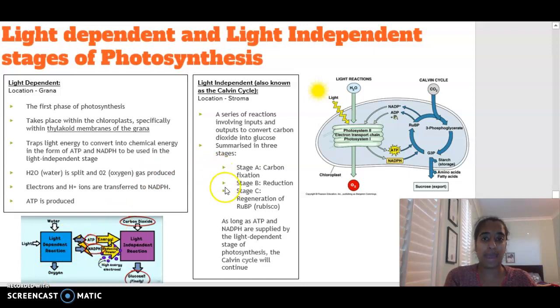Moving on to the second part of photosynthesis, this ATP and NADPH is going to be involved as an input. So the light-independent stage, you may also have heard it as the Calvin cycle, those two names are interchangeable, occurs in the stroma of the chloroplast, so that liquidy or fluid area. There's basically a series of reactions that are going to involve inputs and outputs to convert carbon dioxide into glucose.